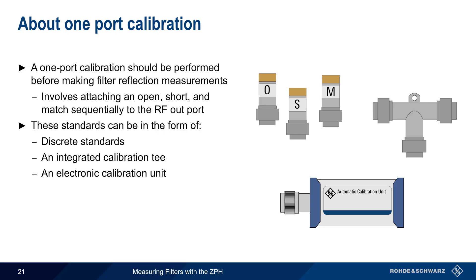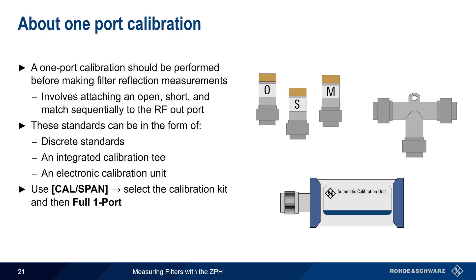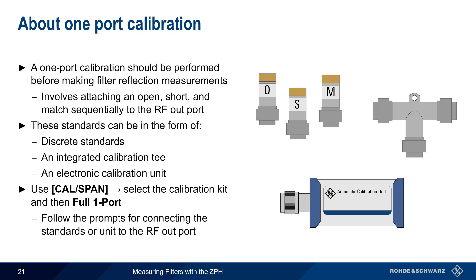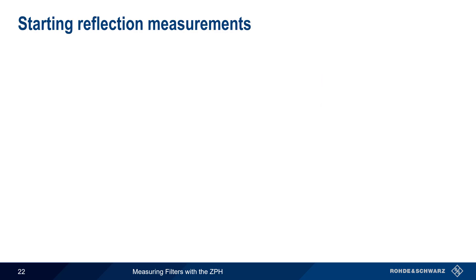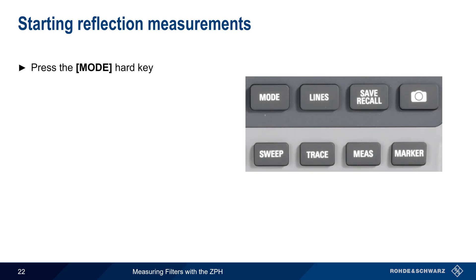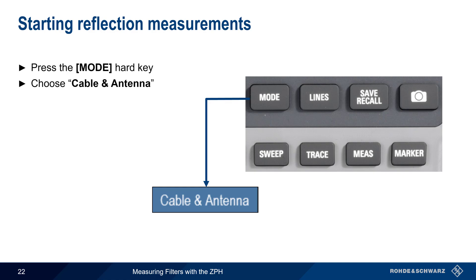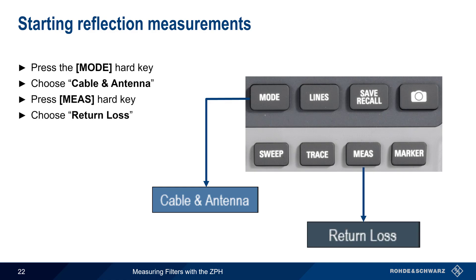Regardless of which type of standards are used, the process is started by pressing the Cal Span hard key, selecting the calibration kit, and then Full One Port. Next, simply follow the prompts for connecting the manual standards, or the automatic calibration unit, to the RF output port. To start reflection measurements, press the Mode hard key and Cable and Antenna as before. This time, however, press the Measure hard key and select Return Loss as the measurement type.